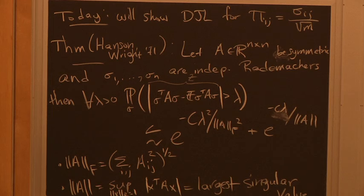So Hanson-Wright tells us: the probability over π that |‖πx‖² − E[‖πx‖²]| > ε equals the probability over σ that |σ^T A_x^T A_x σ − E[σ^T A_x^T A_x σ]| > ε. And note that E[‖πx‖²] = 1. This is Hanson-Wright with A = A_x^T A_x.